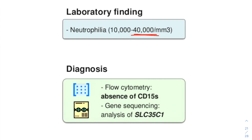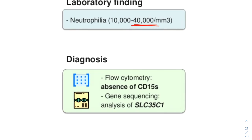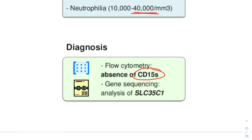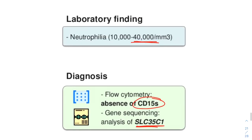For lab diagnosis of LAD2, flow cytometric analysis demonstrates absence of CD15S or the Sialyl-Lewis-X expression, done using a monoclonal antibody directed against Sialyl-Lewis-X. Genetic sequencing will reveal defects in the SLC35C1 gene. The gold-standard diagnostic test is flow cytometry showing absence of Sialyl-Lewis-X expression or absence of CD15S.